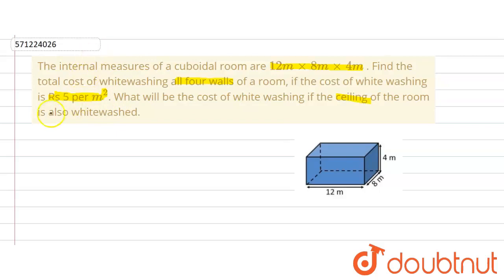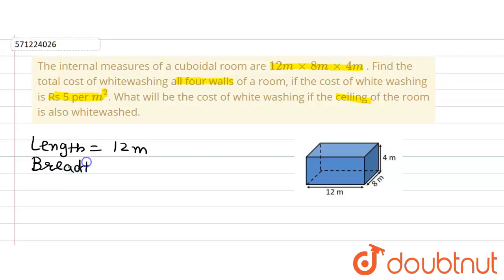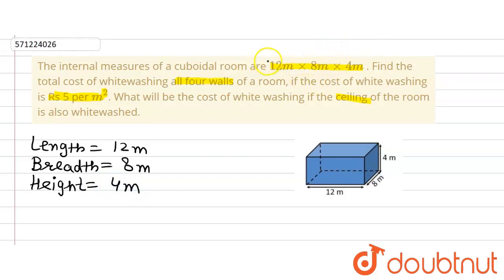Let's first write down what is given in the question. We are given the dimensions of the cuboidal room, as shown in the given figure. The length is equal to 12 meters, breadth is equal to 8 meters, and the height is equal to 4 meters.